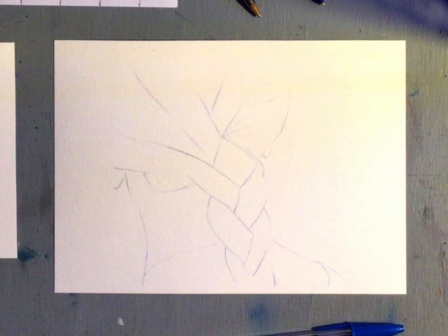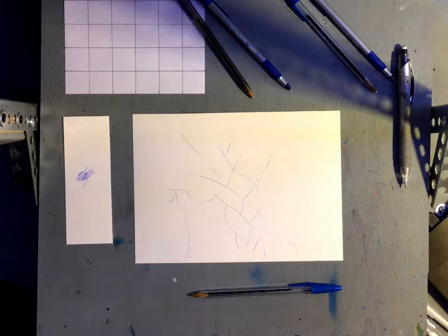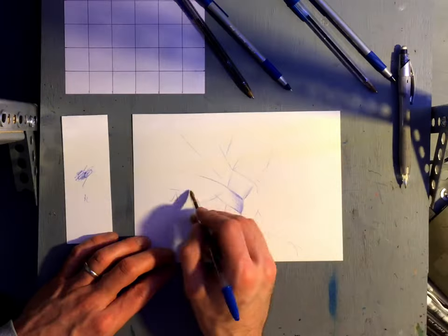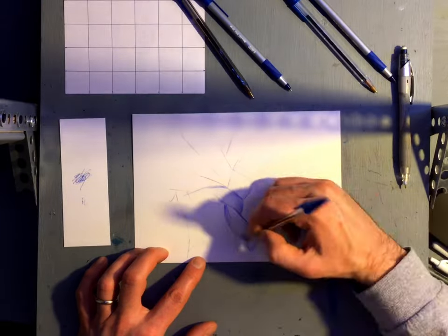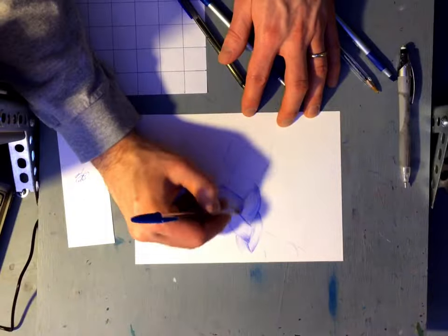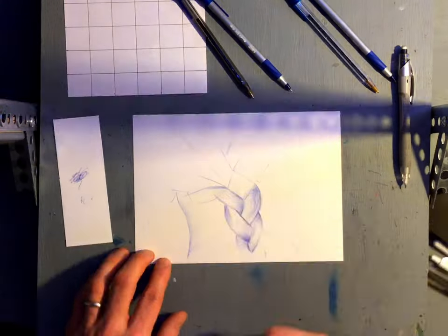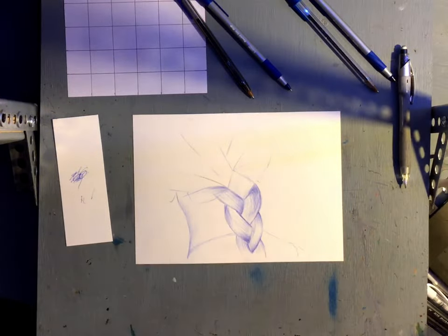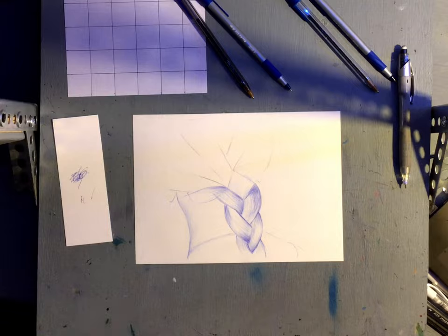So we'll start to anchor in some of the first tones really lightly with the pen. I'm using a big pen at this point, in the same direction as the hair is going, just anchor in a little bit of light tones and we'll work in layers.